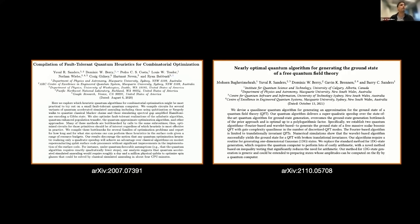These are the two papers I chose. The one on the left was on the archive in 2020 and published earlier this year — it's about combinatorial optimization. The other just appeared on the archive in the last few weeks and is a work we've been doing for quite some time. Both are about quantum algorithms: the left covers combinatorial optimization and the right covers quantum field theory in some sense.